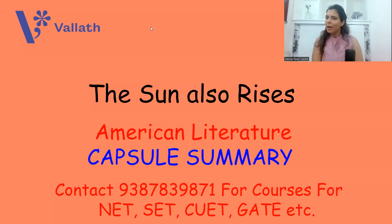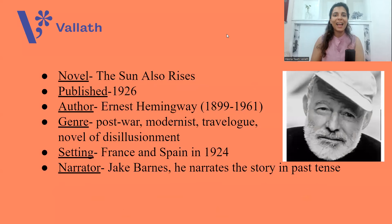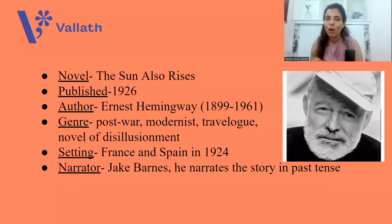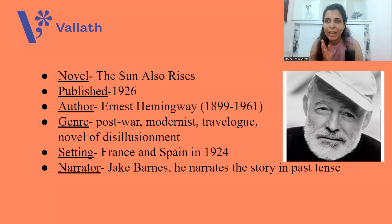A novel of disillusionment, a modernist novel — this is what The Sun Also Rises is all about. Hello, this is Hina from Team Walad. Today we shall discuss the first novel of American author Ernest Hemingway. The name of his first novel is The Sun Also Rises, published in the year 1926. The genre of this novel is post-war, modernist. It is a travelogue because people are traveling constantly, but aimlessly and uselessly. Basically, lost generation. And also, it is a novel of disillusionment.